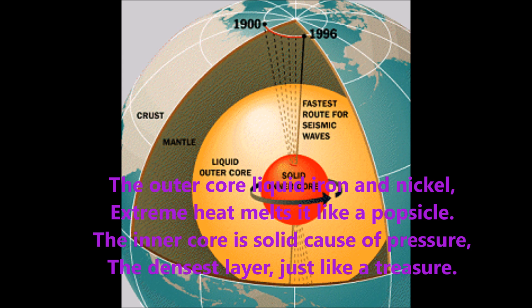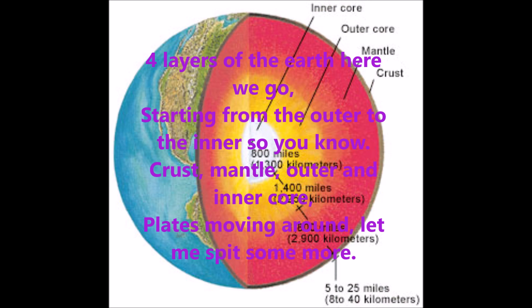The outer core is liquid iron and nickel — extreme heat melts it, just like a popsicle. The inner core is solid because of pressure, the densest layer, just like treasure.